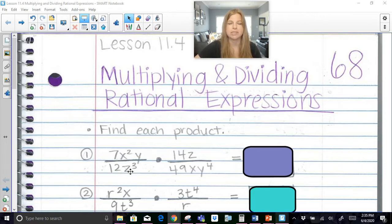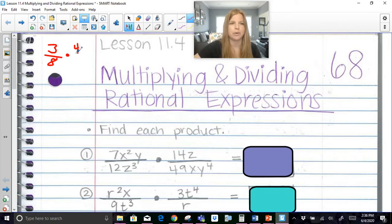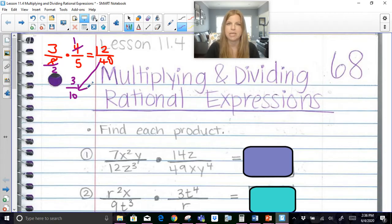So let's take a look. It says find each product. Now I have this fraction over a fraction or this rational expression over a rational expression. And what I want us to remember is about cross-simplifying. Remember back in the day you learned how to multiply, let's say 3 over 8 times 4 over 5. So we're gonna take a look at that here.